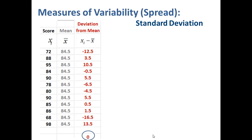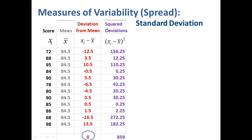Because the sum of the deviations from the mean always equals zero, this would not be a good measure of variability — regardless of our data, we'd always get zero. So we want to take into account the magnitudes of each value regardless of sign. One way to do this is squaring each deviation before summing. Negative 12.5 squared yields 156.25, 3.5 squared yields 12.25, and so on. The sum of our squared deviations is 859.